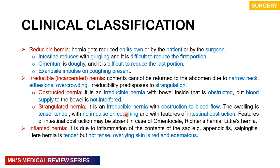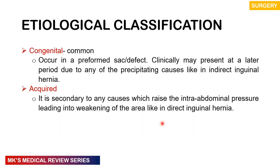Features of intestinal obstruction may be absent in omentoceles, Richter's hernia, and Littre's hernia, but you will still get tenderness, tenseness, and swelling. The irreducible hernia could sometimes be obstructed — the bowel inside is obstructed but blood supply is not interfered with; you refer to that as an obstructed hernia. You may also have an inflamed hernia due to inflammation of contents, for example appendicitis or salpingitis — here the hernia is tender but not tense, and the overlying skin is red and edematous.